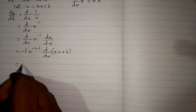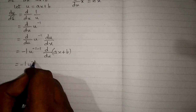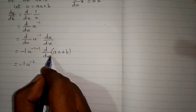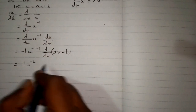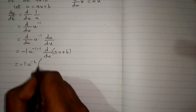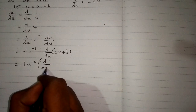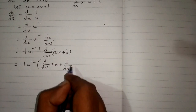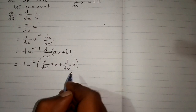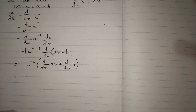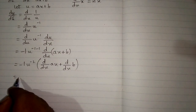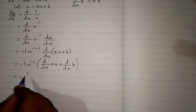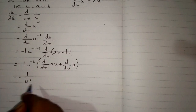This can be written as minus 1 times u to the power minus 2, and we apply the derivative on both terms: d/dx of ax plus d/dx of b. Then minus 1 times u to the power minus 2 is written as minus 1 upon u squared.